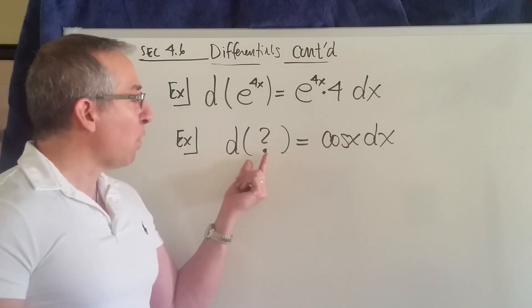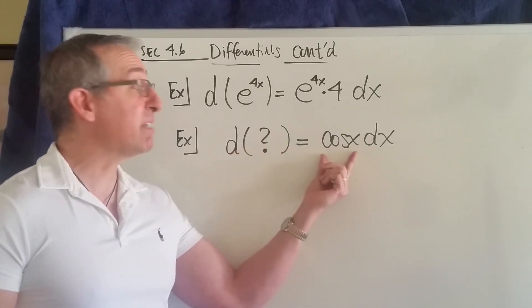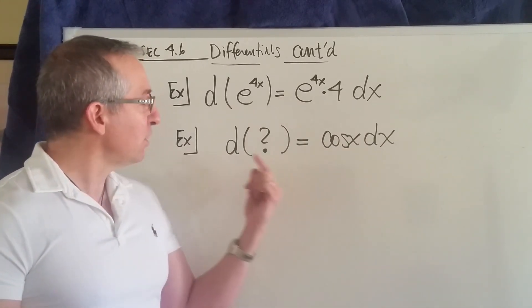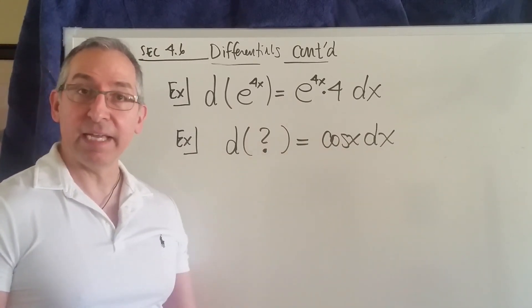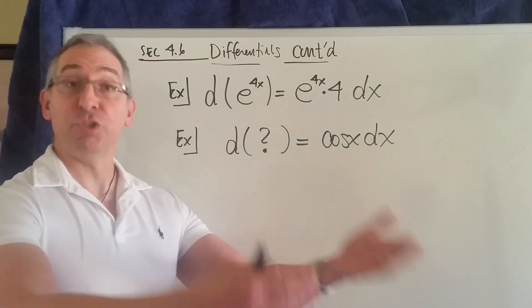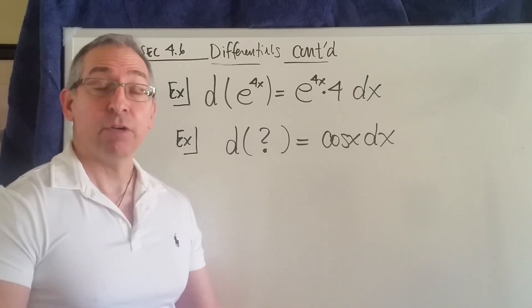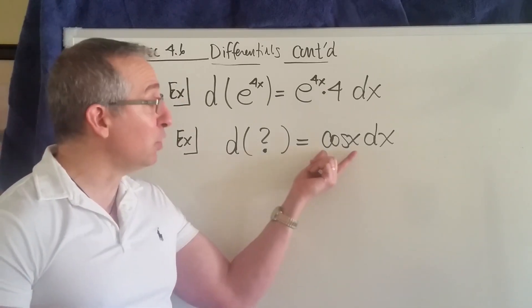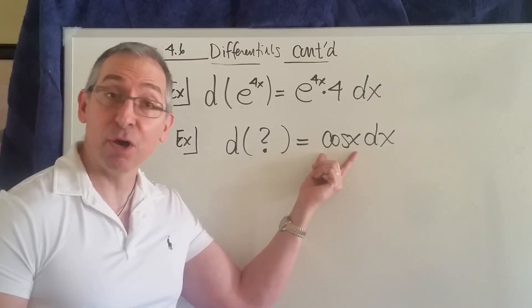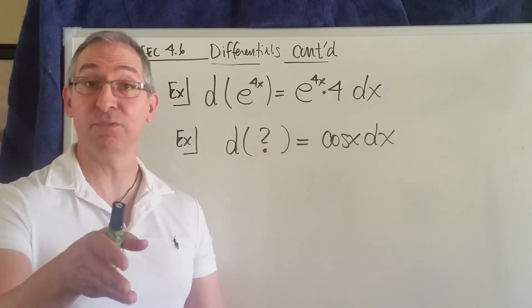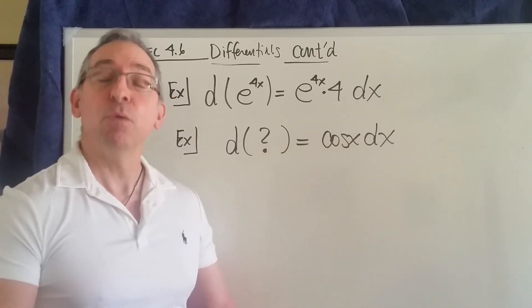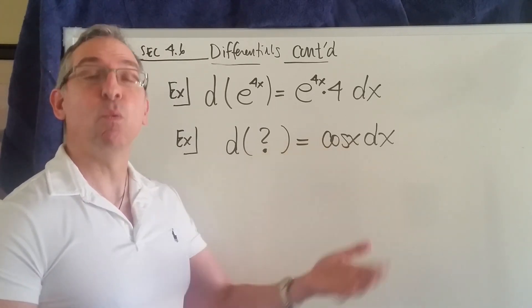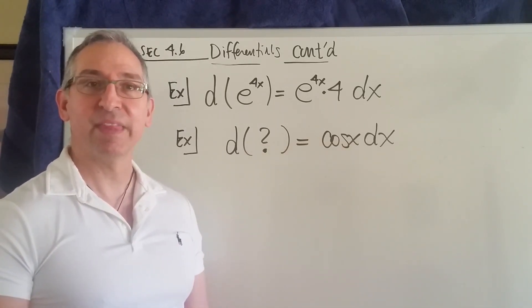The differential of what function is equal to the cosine of x dx? So you have to ask yourself, the derivative of what function is the cosine? So what you're doing is you're working backwards. All this time we've been taking derivatives. Now you know what the derivative is. In this case, it's the cosine. What I'm asking you for is what did it come from? What did you have to take the derivative of in order to get this cosine right here?